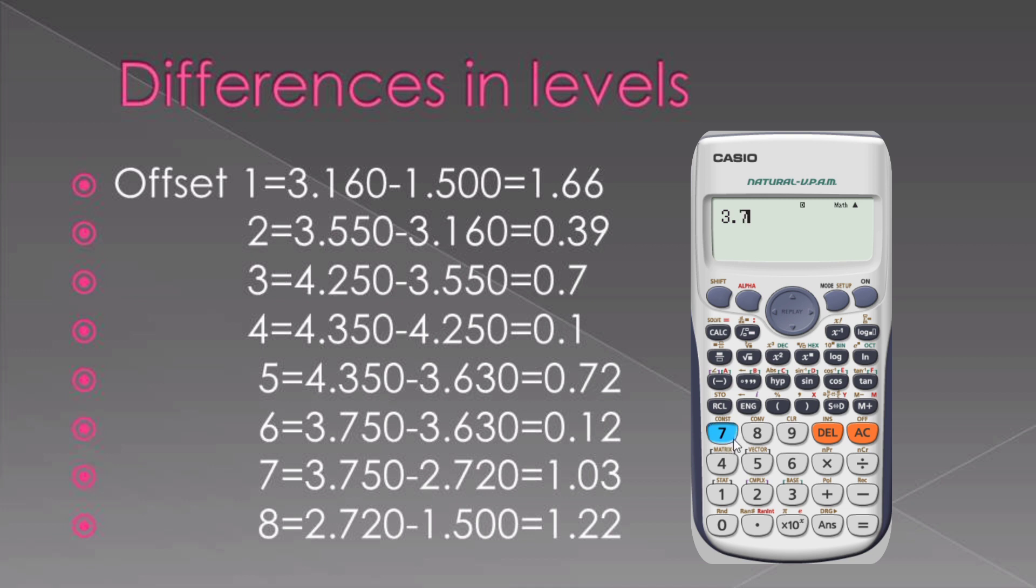Then we move on to our second last point. The difference in elevation between 3.75 and 2.720, that will give me 1.03. Then we move on to the last elevation, the difference between 2.720 and 1.5, that will give me 1.22, the difference in elevation. So all those differences in elevation will be my offsets in the terrain provided at the land that is given to me.